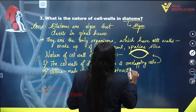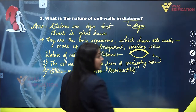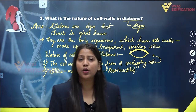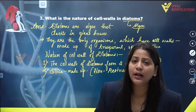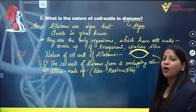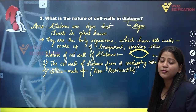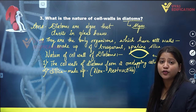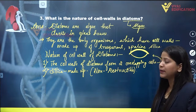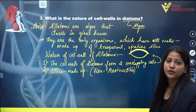Because of the presence of silica in their cell wall, they are non-destructible. So this is the nature of cell walls of diatoms. Diatoms are actually algae, and this is the complete solution of question number three.